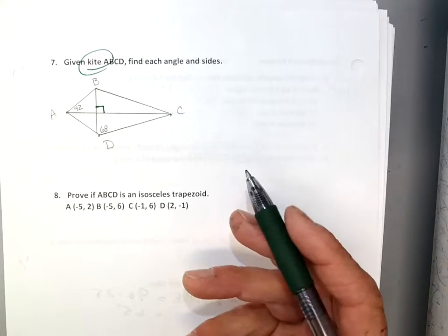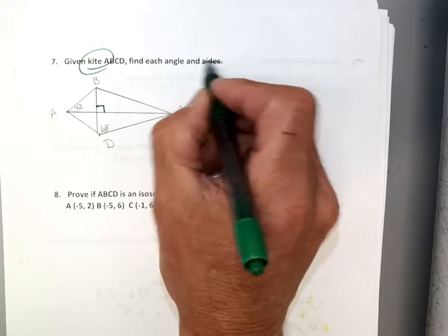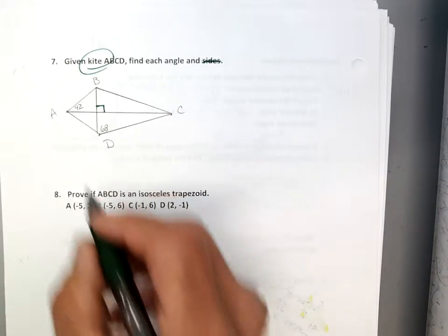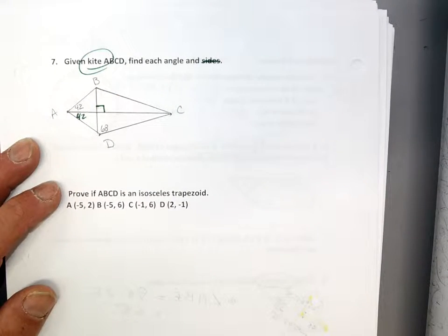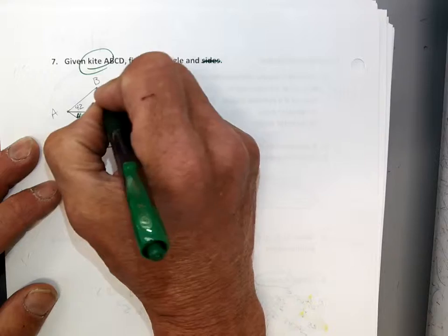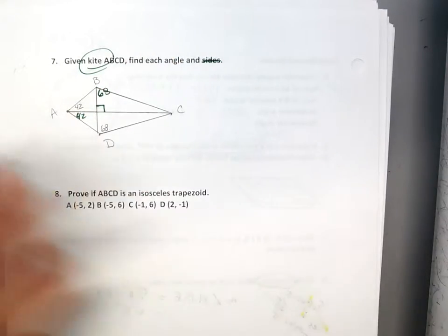Okay. So let's go ahead and see if we can find each angle. And sides, I forgot to put the sides in. I'll have to do that later, okay? So 42, 42, right? Five. 68. 68, right?